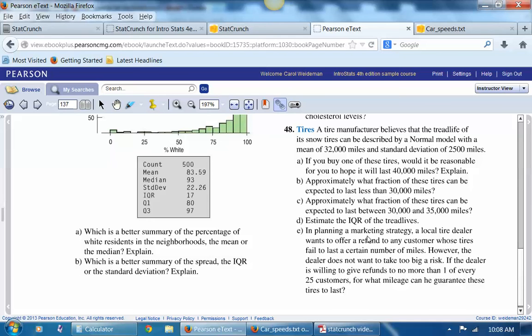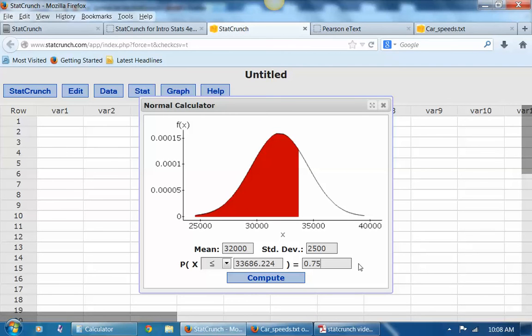And then in a marketing strategy, a local tire dealer wants to offer a refund for tires that don't last a certain number of miles. If he only wants to give a refund to 1 out of 25, what mileage should he use to guarantee that? So 1 out of 25 would mean the area is 0.04. And so we want to calculate if it doesn't last at least that long. So the cutoff is 27,623. I hope that this helps you work your problems in Chapter 5.